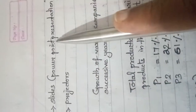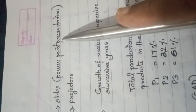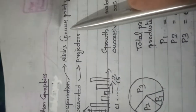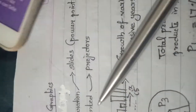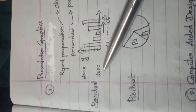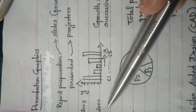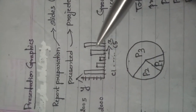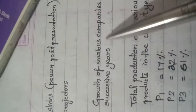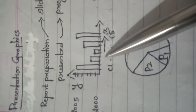If I am using a PowerPoint presentation to represent data, it will be presented before the audience using a projector. Similarly, if I am using a bar chart — let us consider this bar chart — it shows the growth of various companies in successive years. There are two axes: the X axis and Y axis.